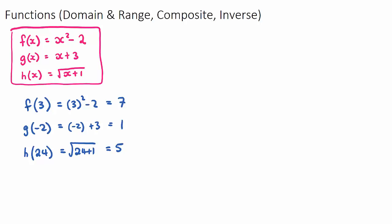Next we move on to domain and range. These are two very important words for functions and relations. The domain is associated with the possible x values, and the range is associated with the possible y values. You can also think of it as: the domain is the input and the range is the output.